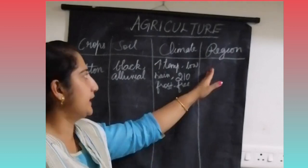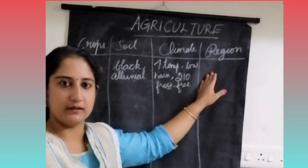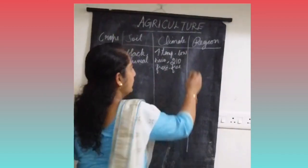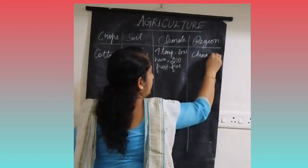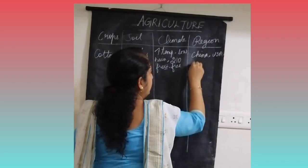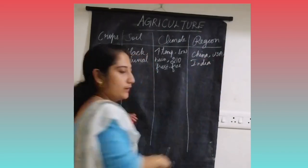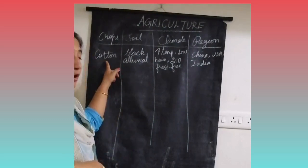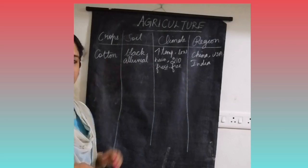Now we shall see the region or area where cotton is cultivated. The regions are China, USA, and India. Cotton is the main raw material for the cotton textile industry.